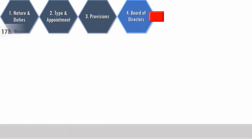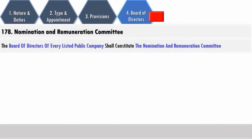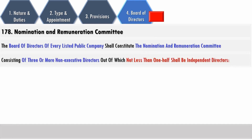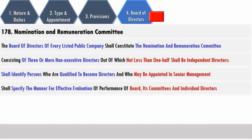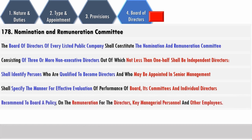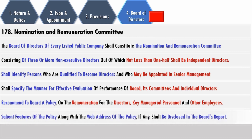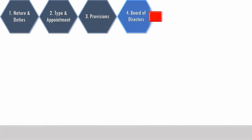A nomination and remuneration committee pursuant to Section 178 can be formed by the board of directors of every listed company, consisting of three or more non-executive directors, out of which not less than one-half shall be independent directors. It shall identify persons qualified to become directors and who may be appointed in senior management. The committee shall specify the manner for effective evaluation of performance of the board, its committees, and individual directors. It may recommend to the board a policy on remuneration for directors, key managerial personnel, and other employees; salient features of the policy along with web address if any shall be disclosed in the board's report.